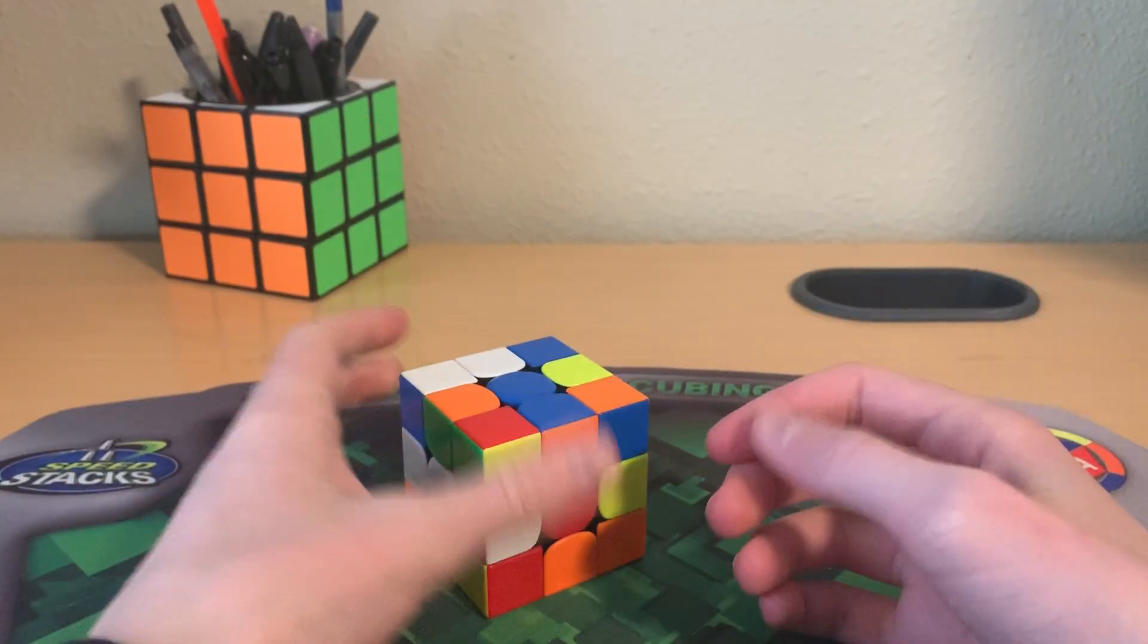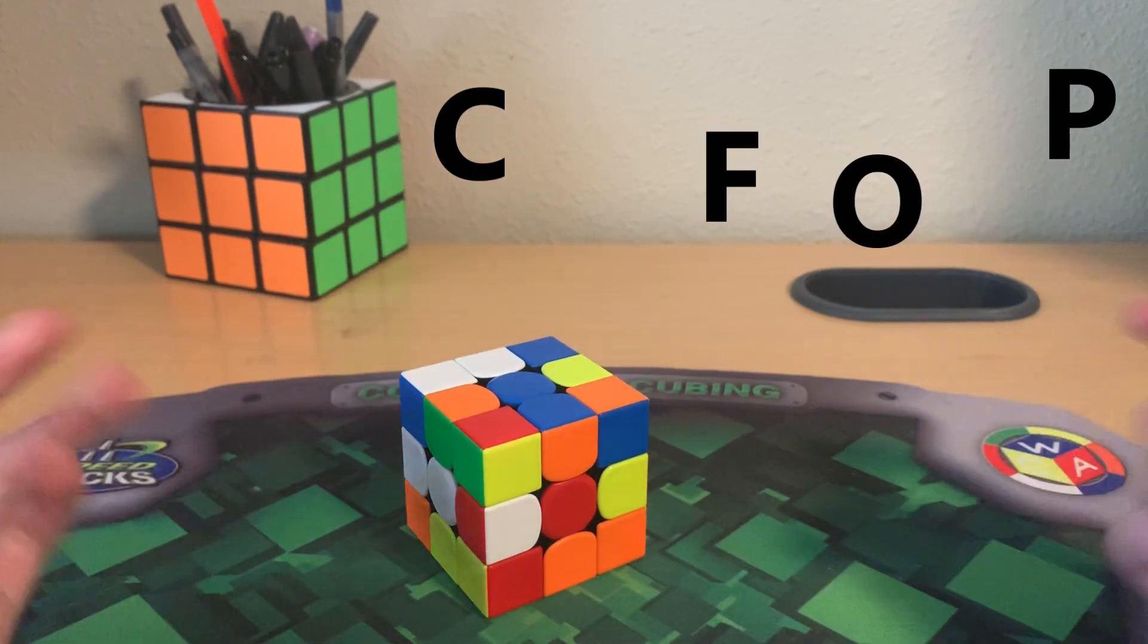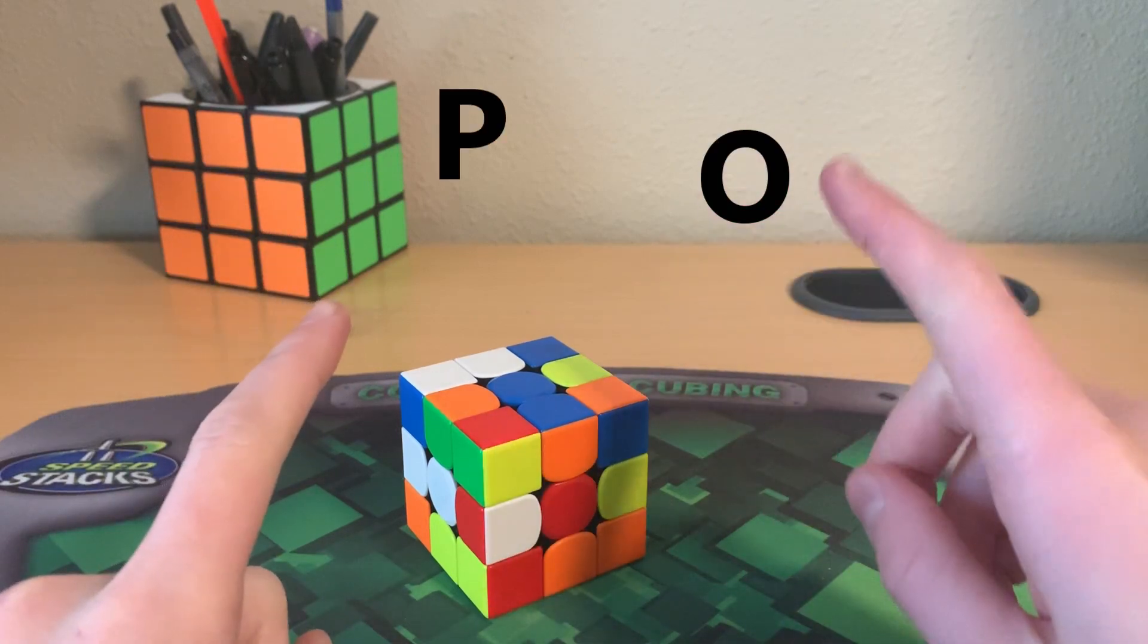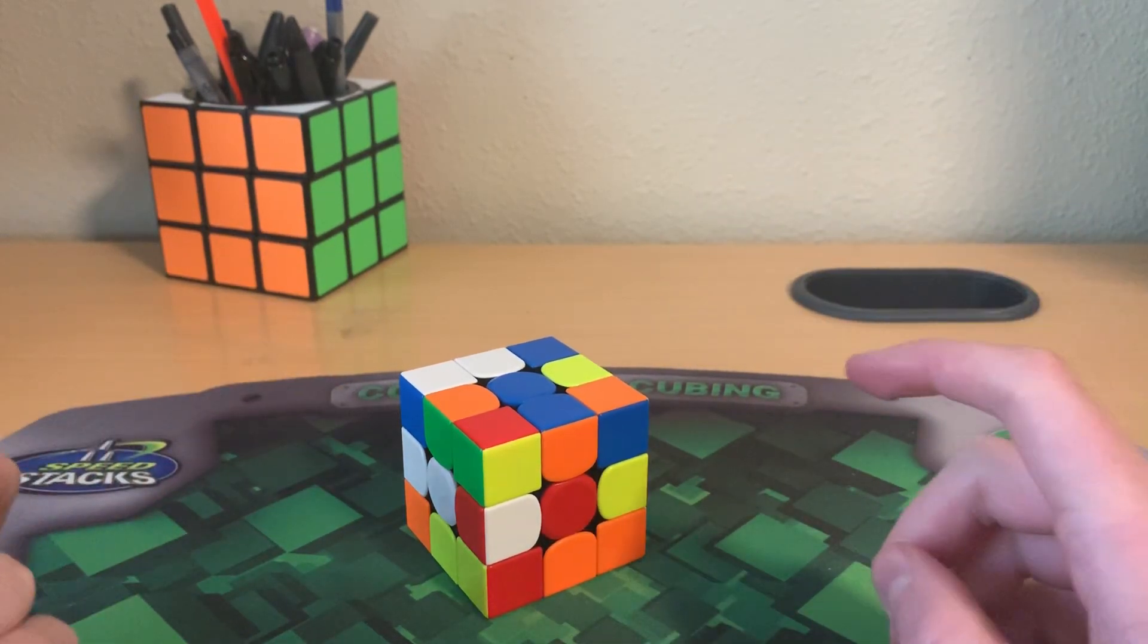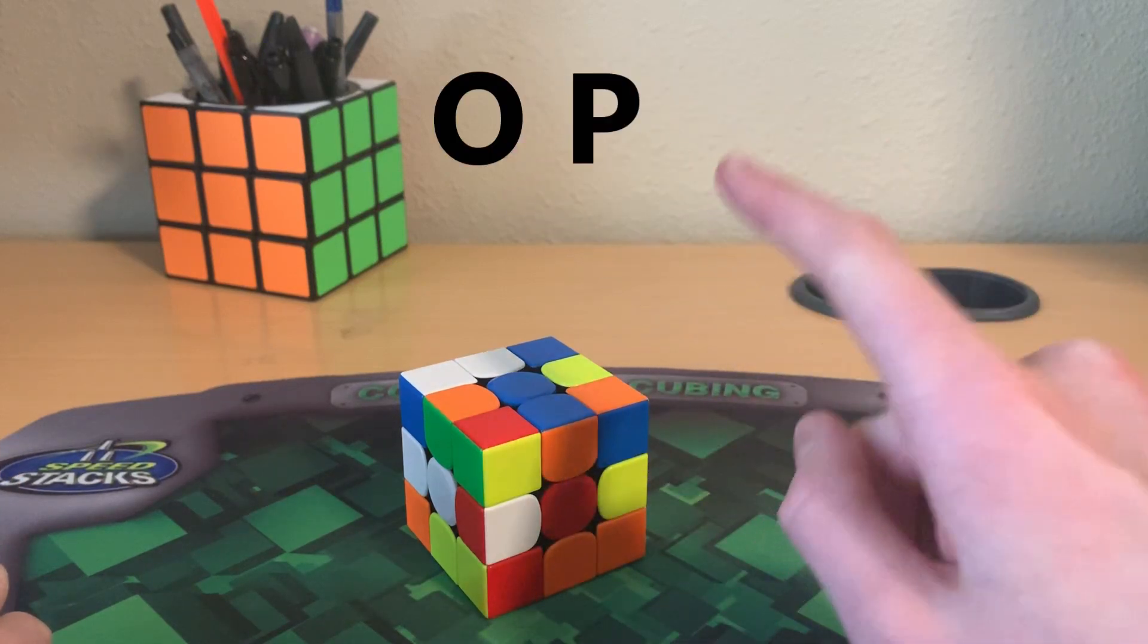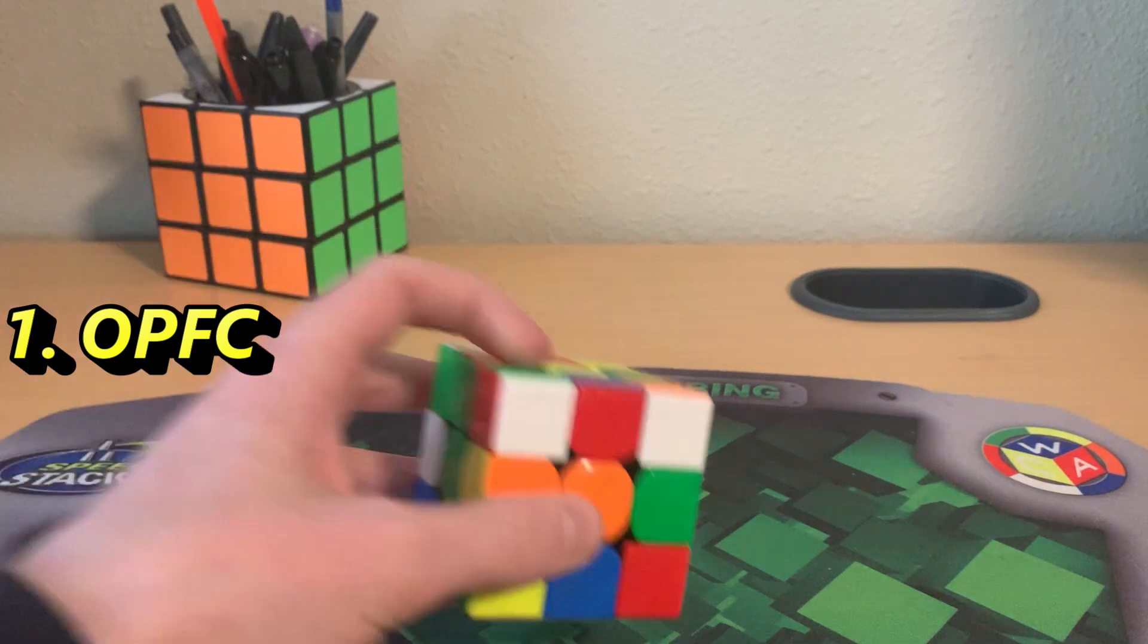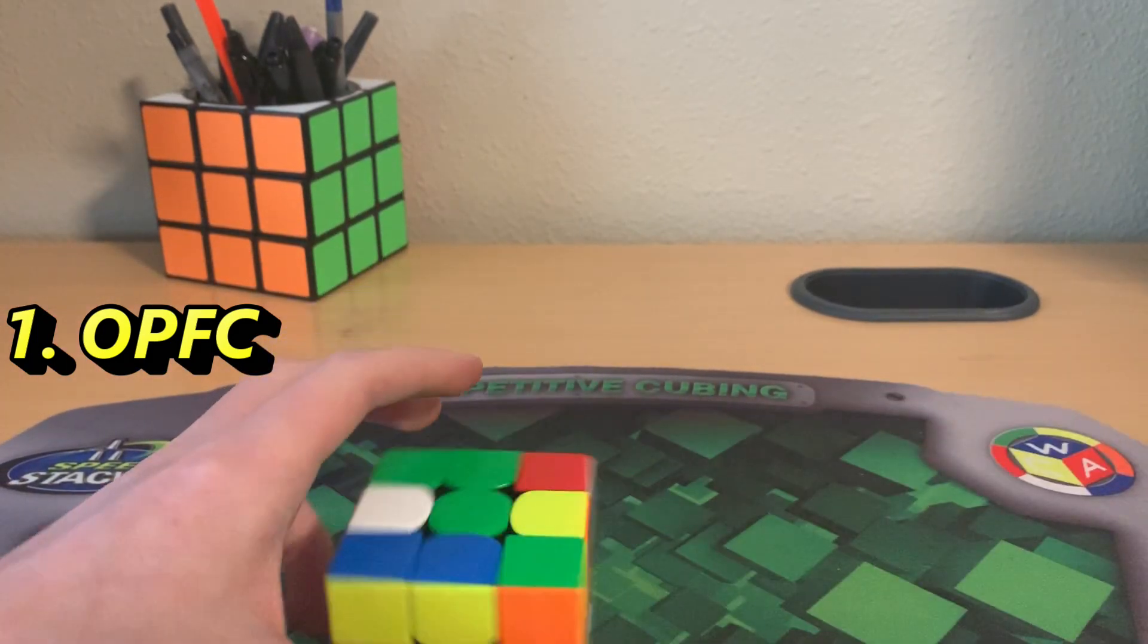Alright, so we all know the classic CFOP method, right? Cross, F2L, OLL, PLL. So the reverse of that should be PLL, OLL, F2L, cross. It makes more sense to do it in this order: OLL, PLL, F2L, cross, or OPFC method. I'm just going to call it OPFC just so I can avoid saying that.